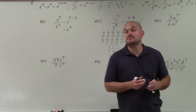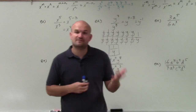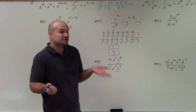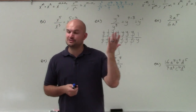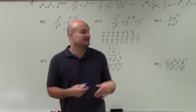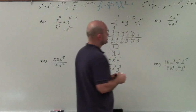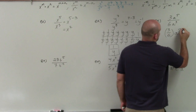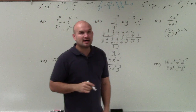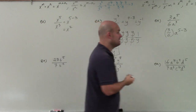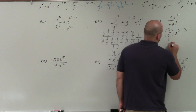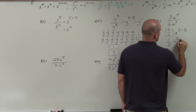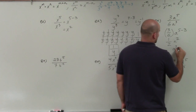In the next example, we have numbers as coefficients. We always want to handle the numbers separately, and remember you're just doing division. You can either divide the denominator into the numerator; if it doesn't evenly divide, we have to reduce the fraction. So I'll rewrite this as 3 over 6 times a to the fifth minus 3. Well, 3 over 6 reduces to 1 half, and then that's a squared — so we can write this as a squared over 2.